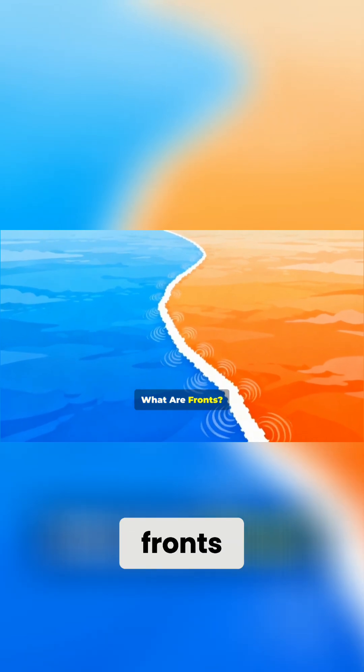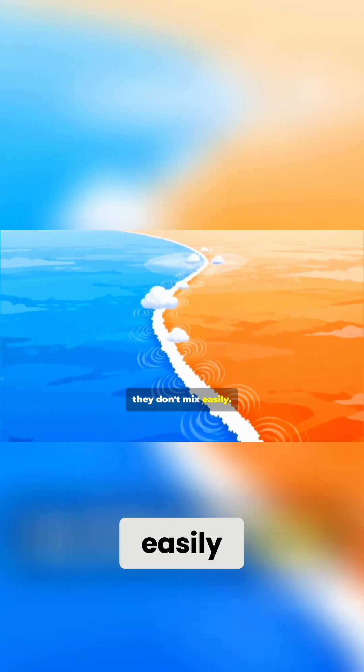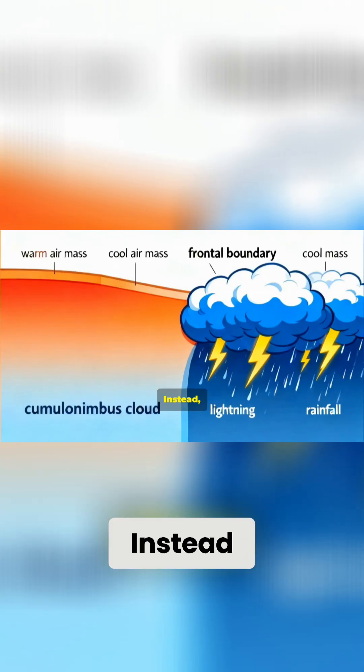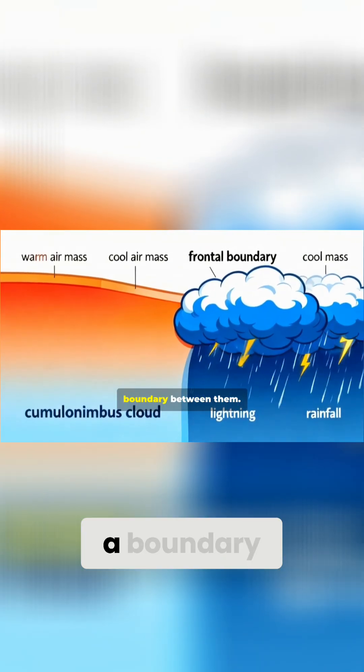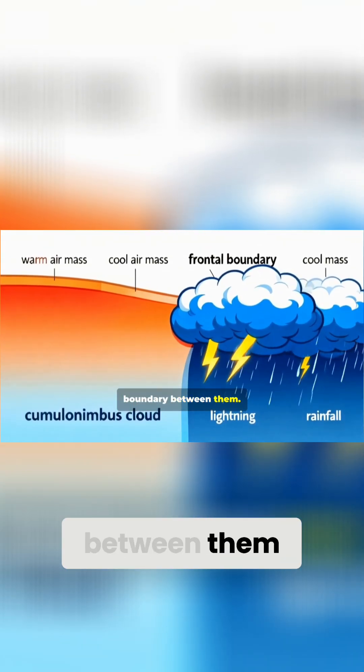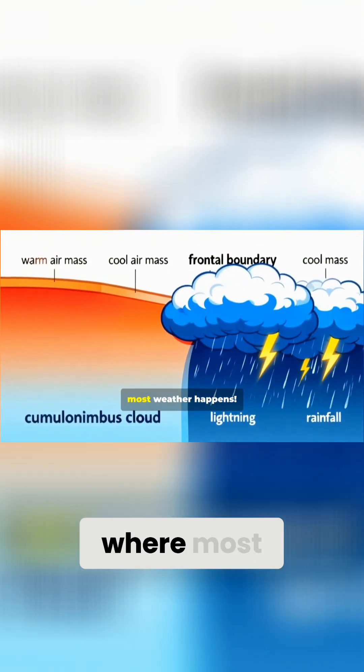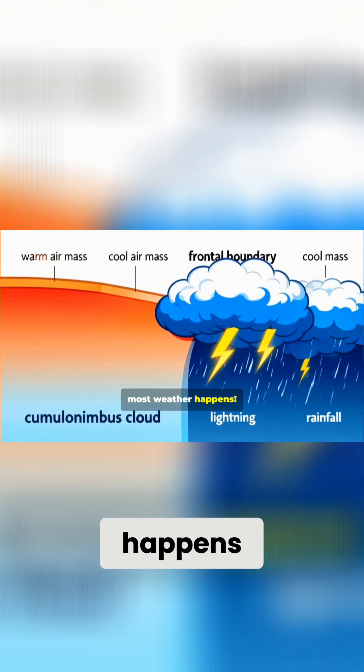What are fronts? Now here's where things get exciting. When two different air masses meet, they don't mix easily. Instead, they form a front — a boundary between them. And that's where most weather happens.